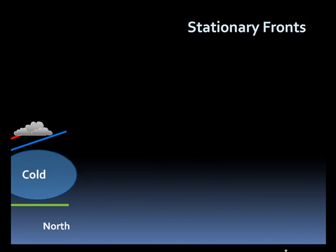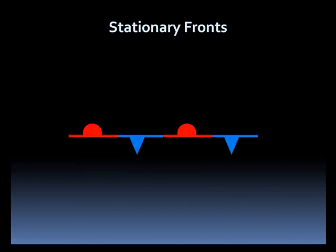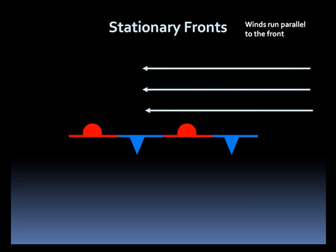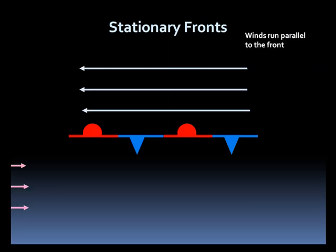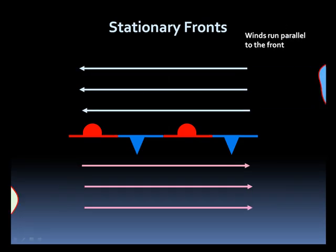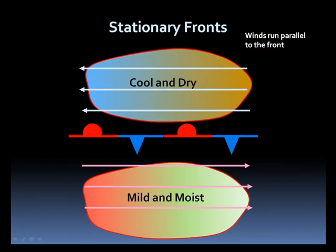Stationary fronts are depicted by alternating segments of warm and cold fronts, with the barbs and cusps pointing in the direction away from the cold and warm air, respectively. Winds generally run parallel to a stationary front, with mild and moist air on the warm side and cool and dry air on the colder side.